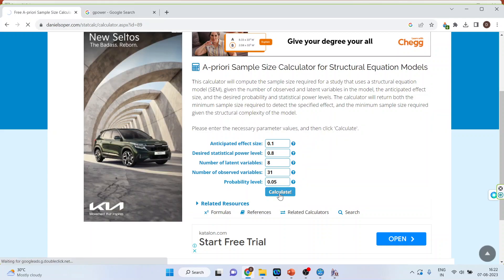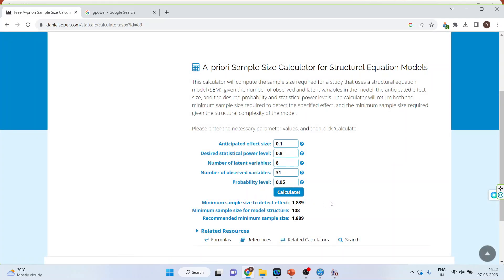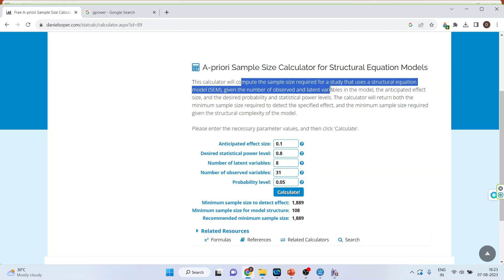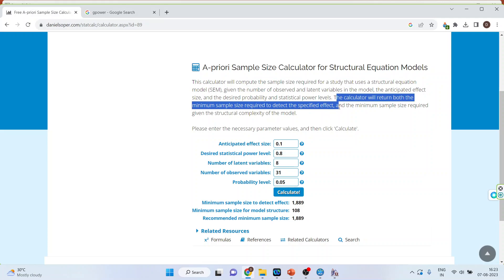Keep the probability level as 0.05 only. Calculate. So the minimum sample size to detect the effect is 1889. Now what this calculator is: This calculator will compute the sample size required for the study that uses a structural equation model given the number of observed variables and the latent variables in the model. The anticipated effect size and the desired probability and statistical power levels we will have to specify. The calculator will return both minimum sample size required to detect the specified effect and the minimum sample size required for the structural complexity of the model.